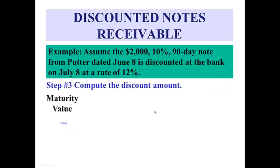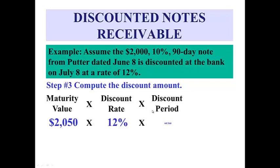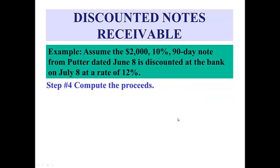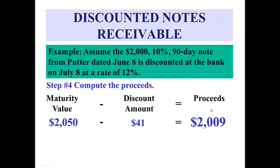The third step is to calculate the discount itself. To calculate a discount, take the maturity value of $2,050 at a discount rate of 12% — that's what the bank charges — for 60 days. The bank is going to earn a discount of $41. The fourth step: the proceeds are the maturity value minus the bank discount. So the proceeds are $2,009. This is what the business gets, and this number is what we will be dealing with in our journal entry.